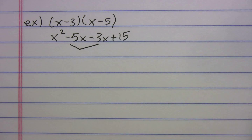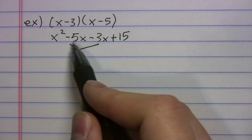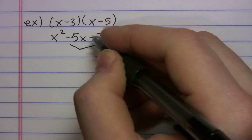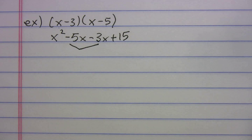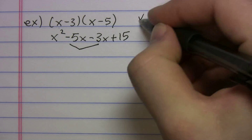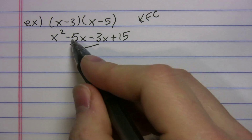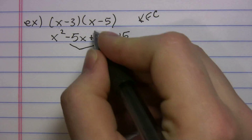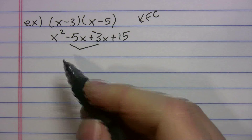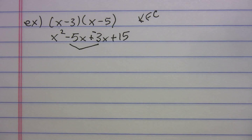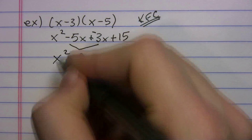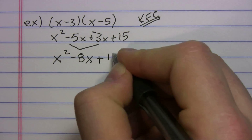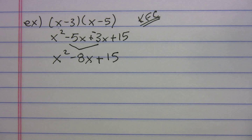Combining like terms can be a little confusing when you have negatives. A student taught me a nice trick — he asked 'Do you like KFC?' and wrote it down: that stands for Keep, Flip, Change. So negative 5 plus negative 3 gives you negative 8x. Bring down the 15 and you're done.